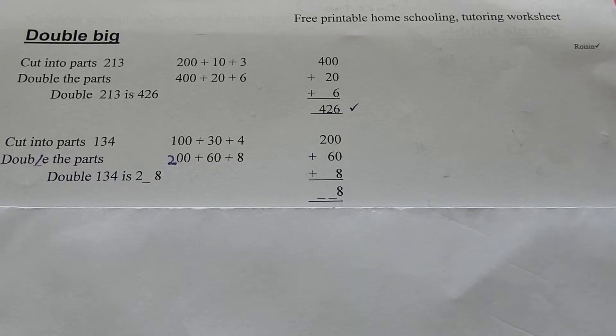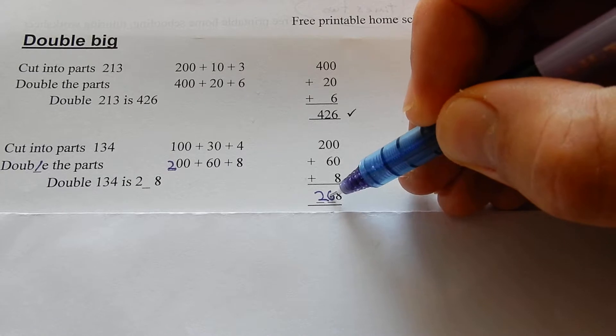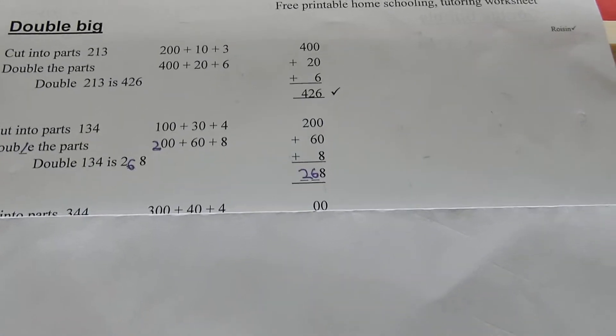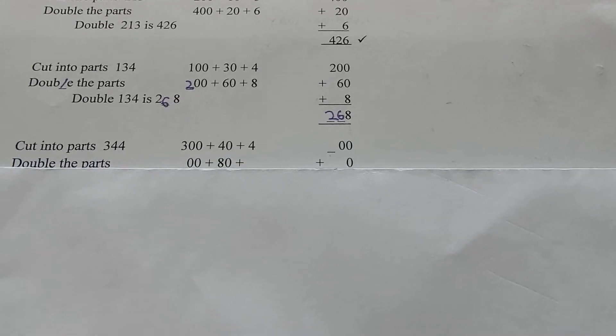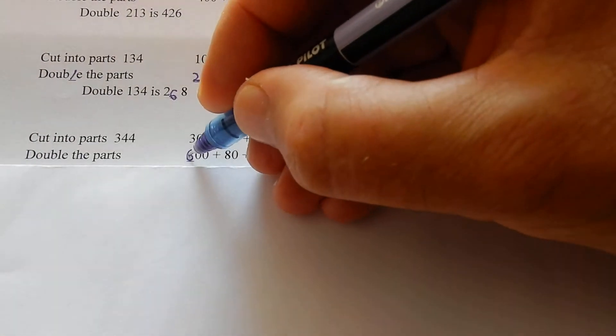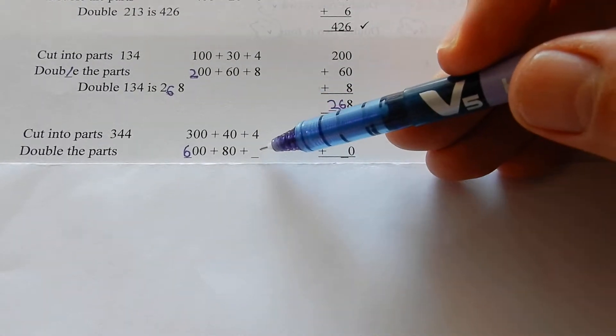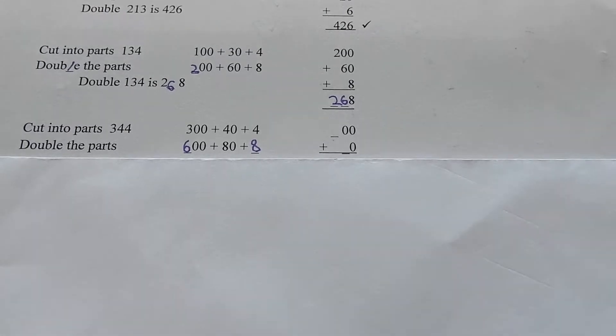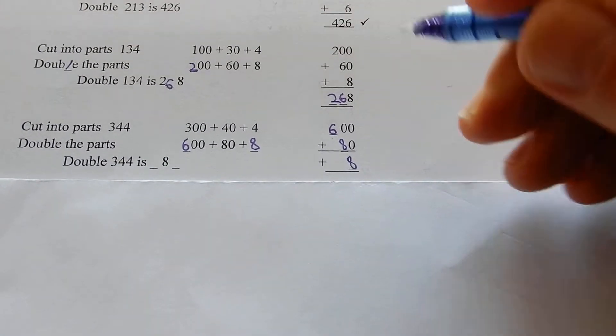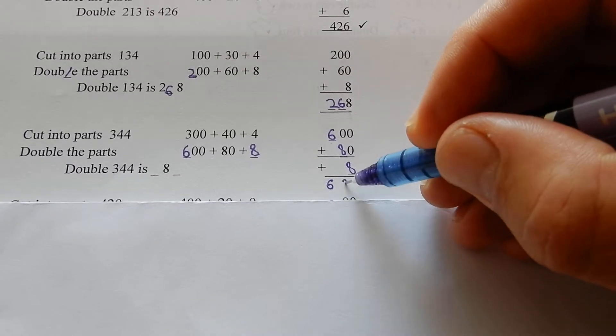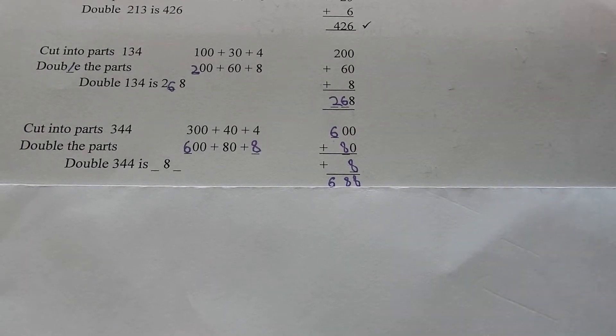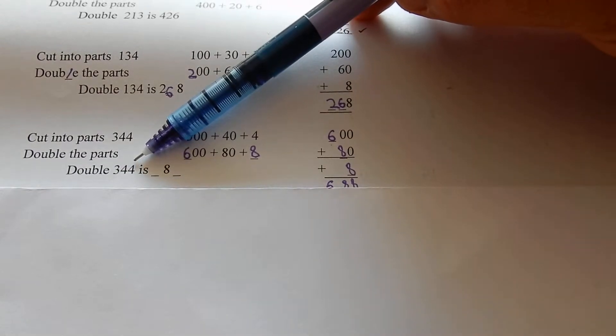Double 100 is 200, double 30 is 60, double 4 is 8. 200 plus 60 plus 8 is 268, which is double 134. Now we're gonna double 344. Double the parts: 300 is 600, 40 is 80, 4 is 8. Add those together: 600 plus 80 plus 8, answer is 688.